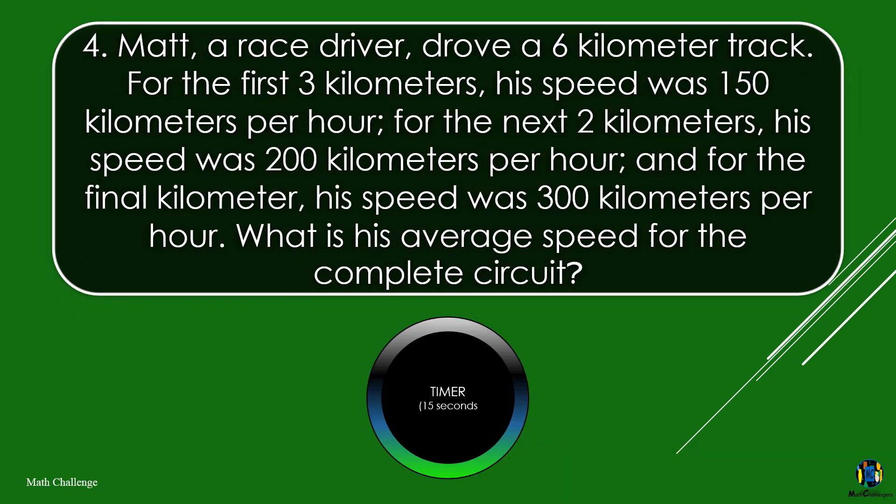Matt, a race driver, drove a 6-kilometer track. For the first 3 kilometers, his speed was 150 kilometers per hour; for the next 2 kilometers, his speed was 200 kilometers per hour; and for the final kilometer, his speed was 300 kilometers per hour. What is his average speed for the complete circuit?